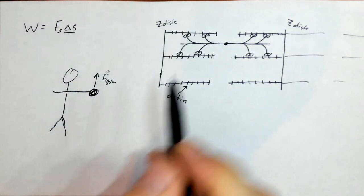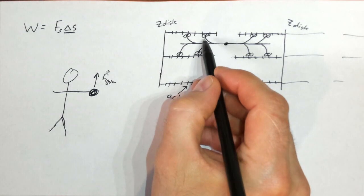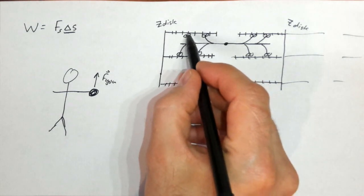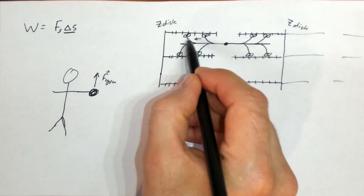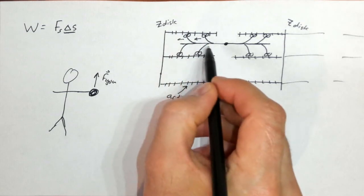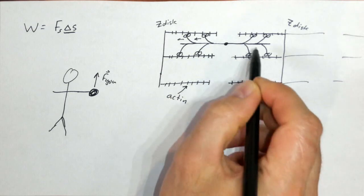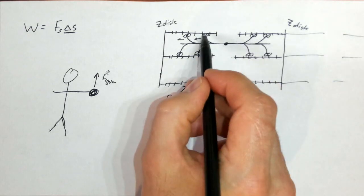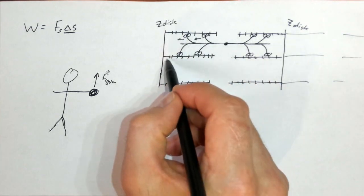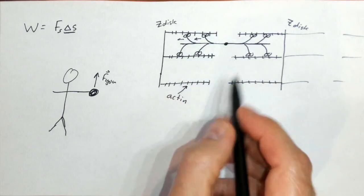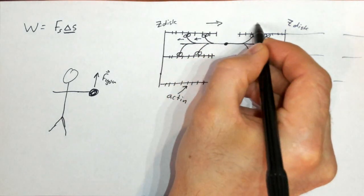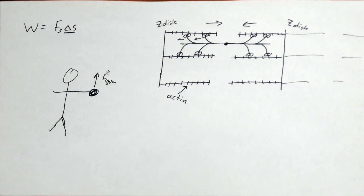And when you flex your muscle, it causes these to hydrolyze ATP and they want to walk. They want to walk down the actin filament, which causes them to pull these actin filaments inward. So these are walking this way. These are walking this way, which effectively is pulling these actin filaments together. So it causes them to come together. And that causes the muscle to contract.